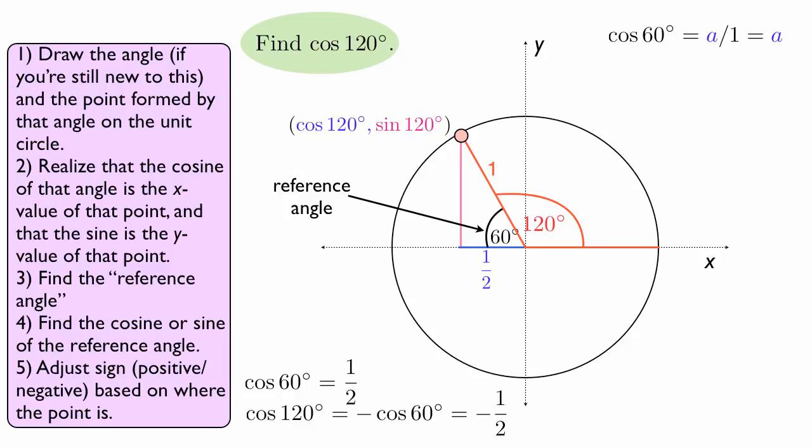Of course, the more comfortable you get, you don't have to do all of these if you feel really comfortable. But the first thing is draw the angle and draw the point formed by that angle, and realize that the cosine of that angle is the x value of that point and the sine is the y value of that point. That's the definition of cosine and sine for angles that are greater than 90 degrees.